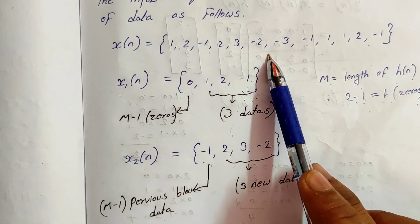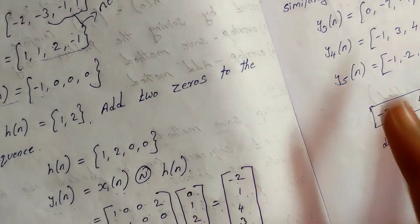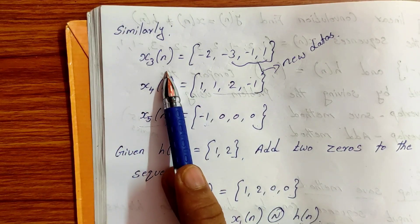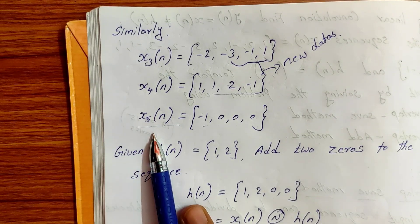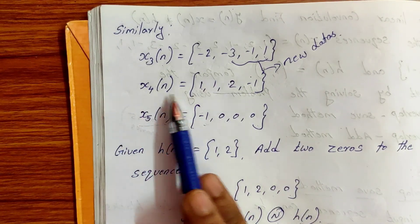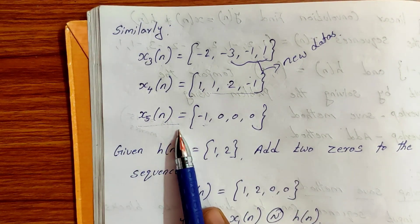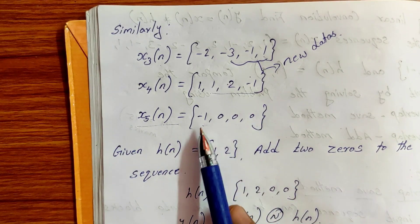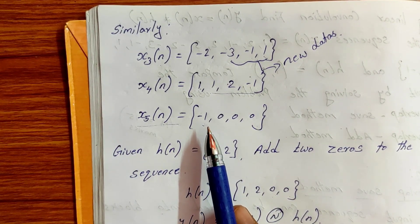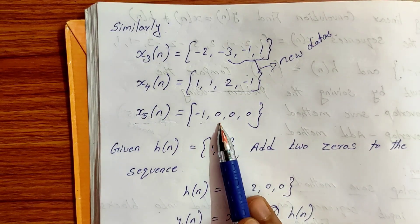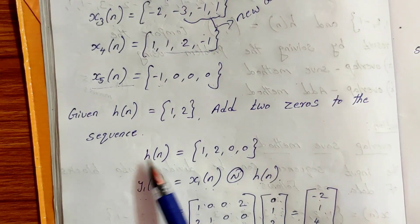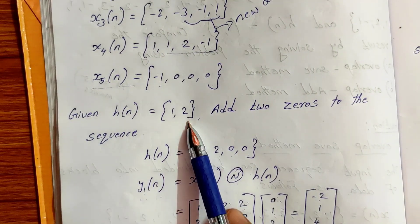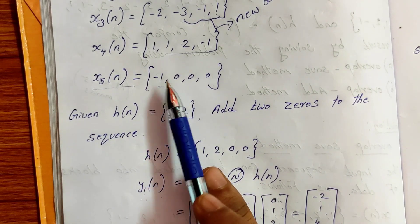We need to add x3[n], x4[n], x5[n] similarly. For x5[n], we need to pad with zeros at the end: {0, 0, 0}. Given h[n] is equal to {1, 2}, for x5[n] we add zeros to complete the segment.